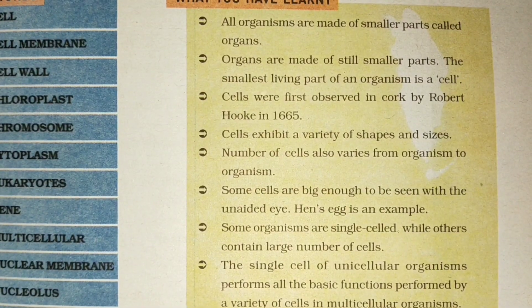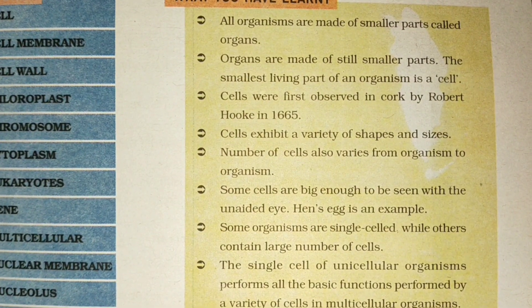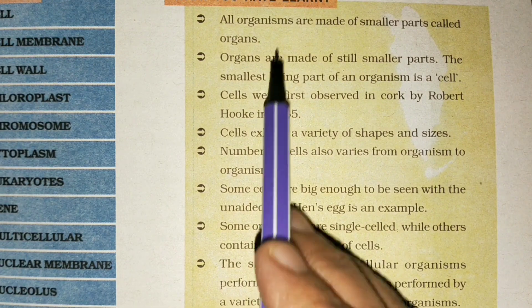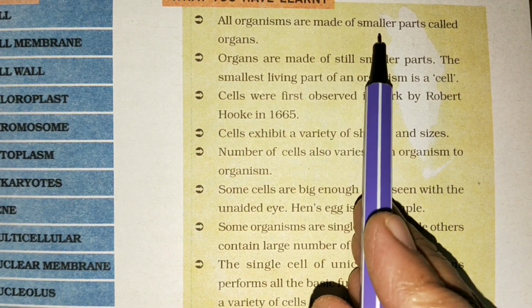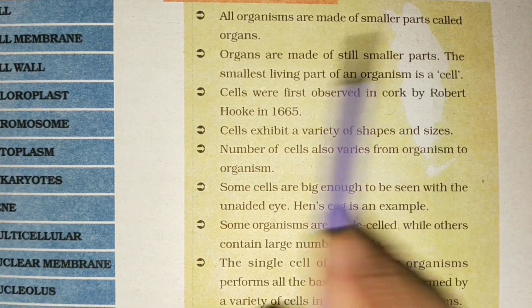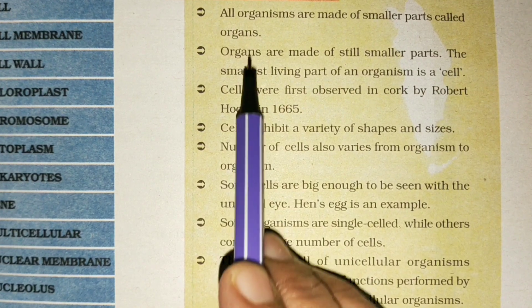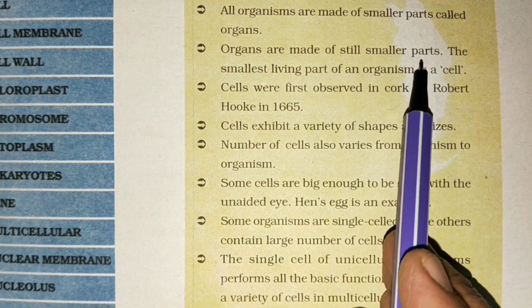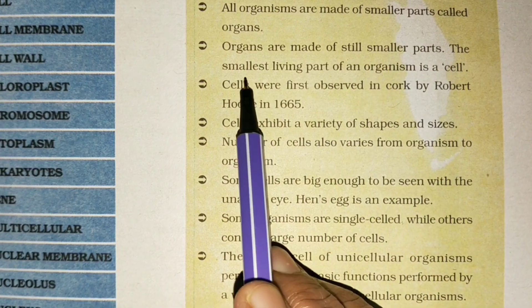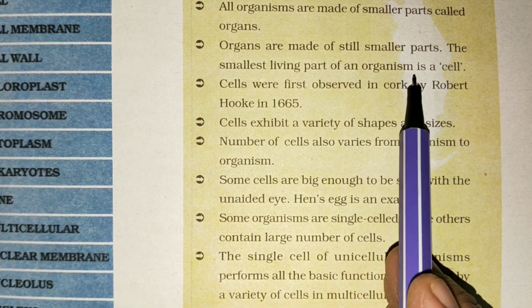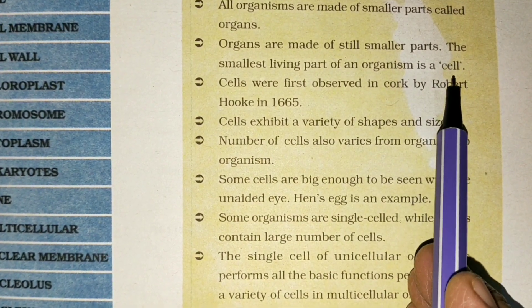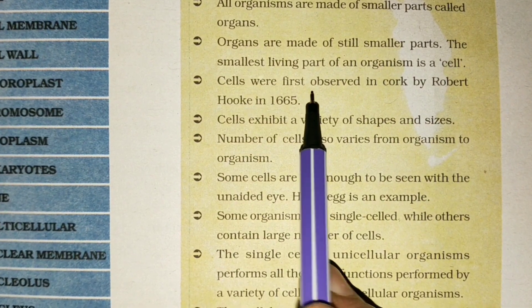Welcome to Indraaj classes. Today we will discuss about cell. All organisms are made of smaller parts called organs. Organs are made of still smaller parts. The smallest living part of an organism is a cell. Cells were first observed